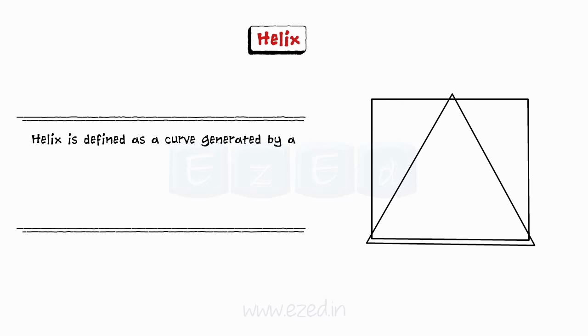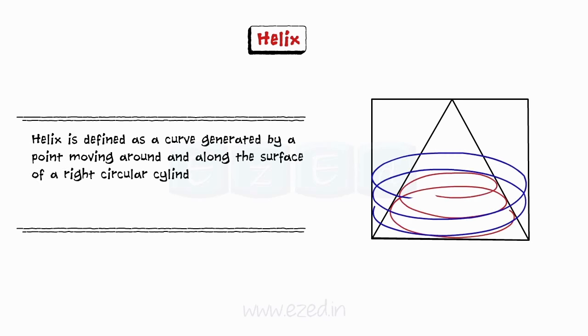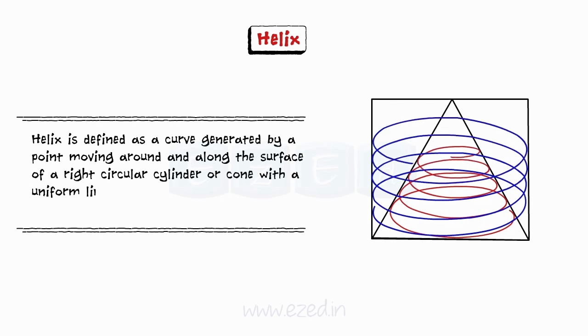Final curve is the helix curve. Helix is defined as a curve generated by a point moving around and along the surface of a right circular cylinder or cone with a uniform linear velocity in the direction of the axis.